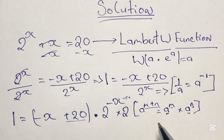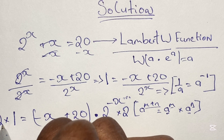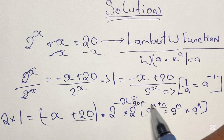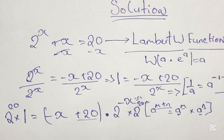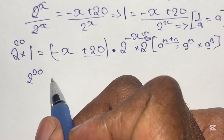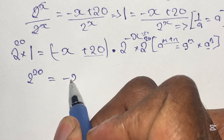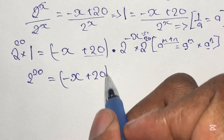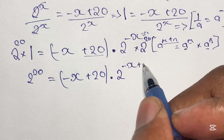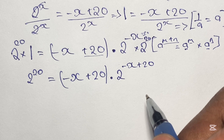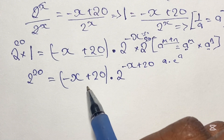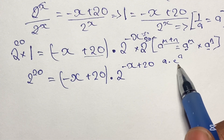So here we multiply both sides of the equation by 2 to the power of 20, because we want the 20 in the exponent. On the left we have 2 to the power of 20 times 1. Since anything multiplied by 1 is just itself, that means we have 2 to the power of 20 is equal to negative x plus 20 in brackets times 2 to the power of negative x plus 20, according to the rule we just looked at. Now you can see that our equation is starting to look like a times e to the power of a, with negative x plus 20 appearing in both the base and the power.